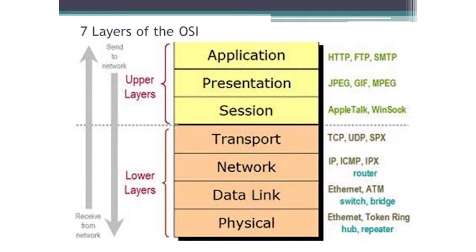That's copper, fiber, radio frequency, microwave, infrared, communications through satellites — which may still be radio frequency of some sort. There are a lot of aspects of the physical side of this. That's another part of the communication we call layer 1.